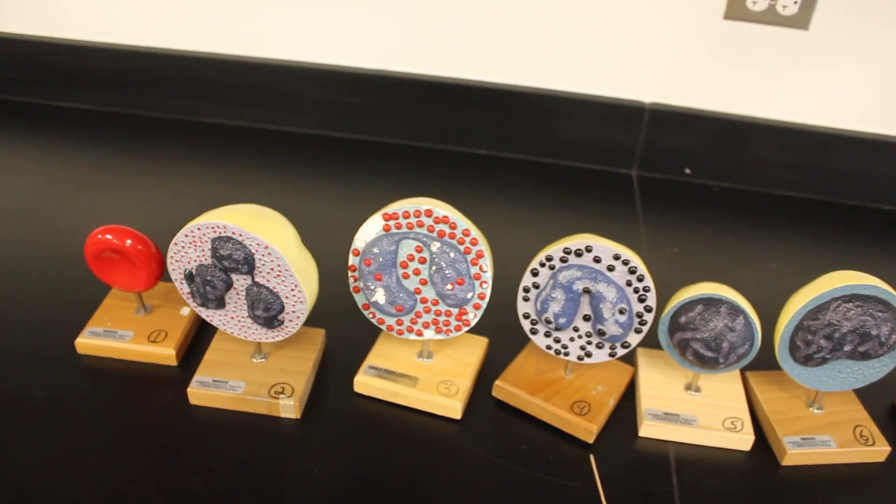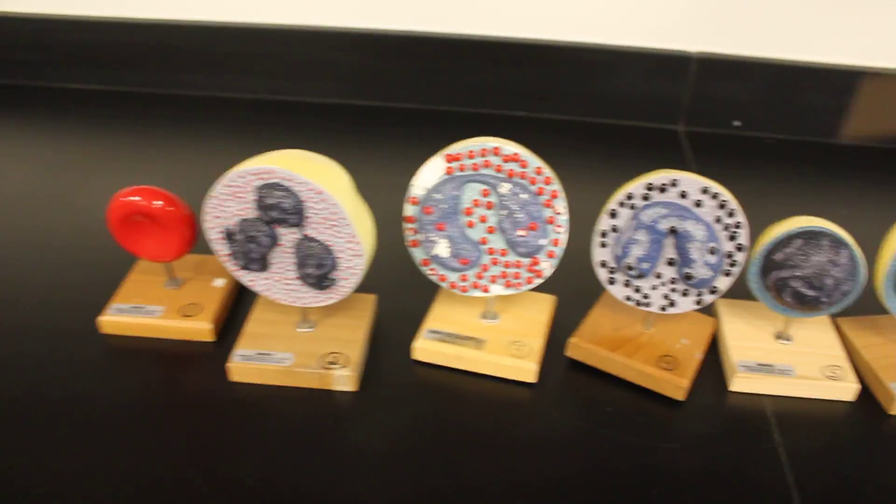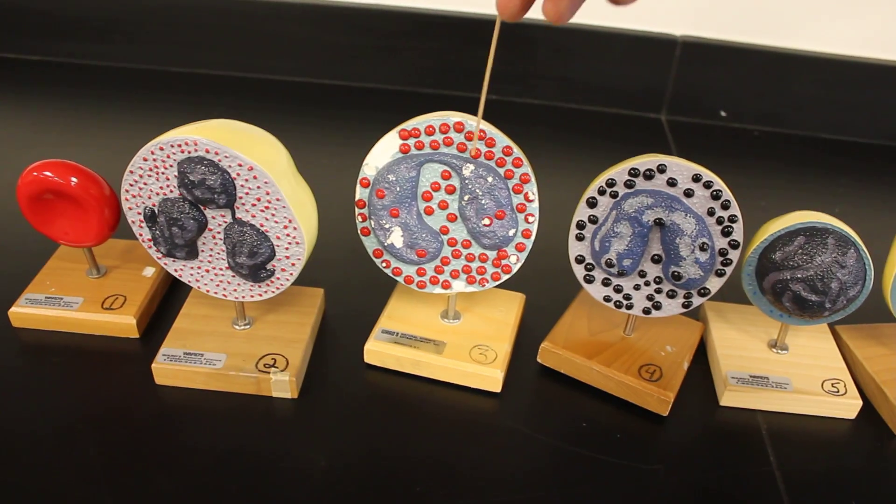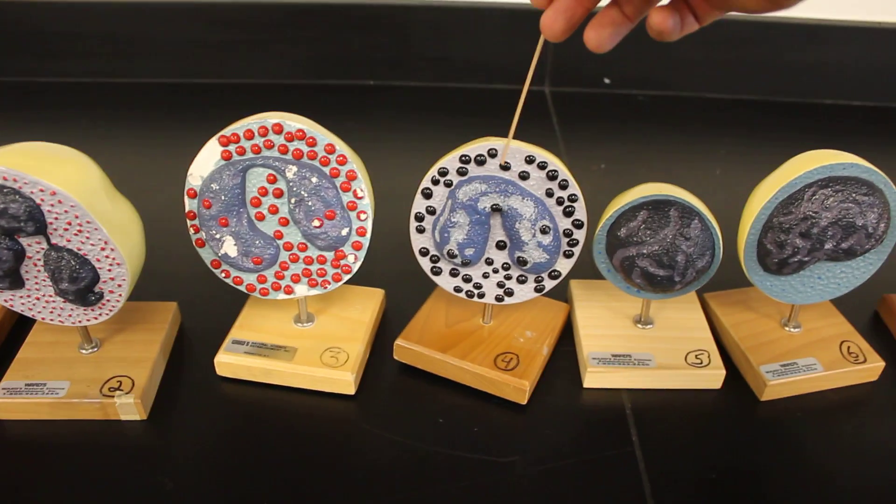The granulocytes are divided into three different ones that, depending on their stain disposition, we call them the neutrophil, the eosinophil, and the basophil.